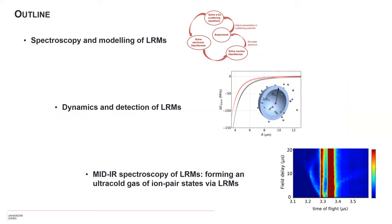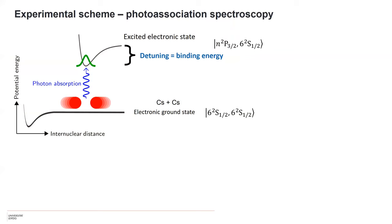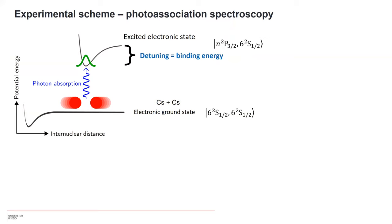Here's the outline, maybe slightly optimistic for how far I get. I'll be brief on the spectroscopy and modeling of long-range Rydberg molecules because Matt made all the important comments on this. Then I will focus on experimental details of the dynamics and detection of long-range Rydberg molecules that turn out to be not so detailed but rather important. This is an outlook of what we are currently doing: the mid-infrared spectroscopy of these long-range Rydberg molecules once they are formed.